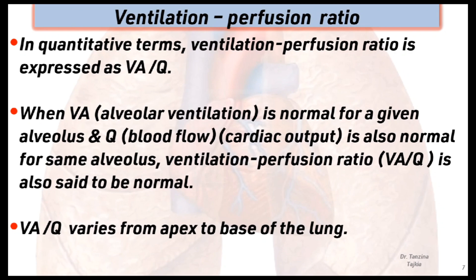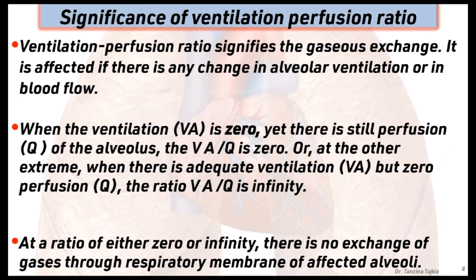This ratio varies from the apex to the base of the lungs. The significance is that gas exchange is affected if there is any change in alveolar ventilation or in blood flow. When ventilation is zero yet there is still perfusion of the alveolus, the ratio is zero. On the other extreme, when there is adequate ventilation but zero perfusion, the ratio is infinity. At a ratio of either zero or infinity, there is no exchange of gas through the respiratory membrane of the affected alveoli.